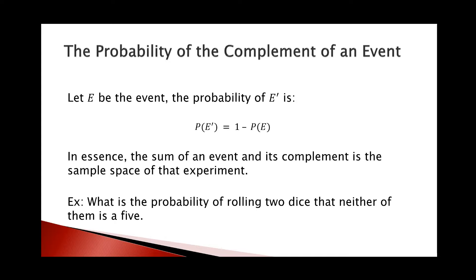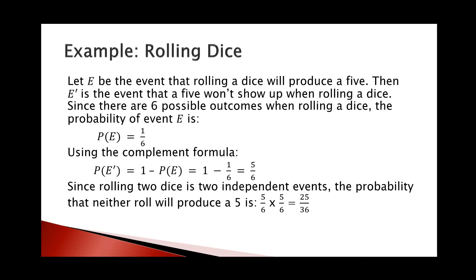Let's illustrate this with an example. What is the probability of rolling two dice such that neither of them is a 5? Let E be the event that rolling a die produces a 5. Then the complement of E is the event that a 5 won't show up when rolling a die. Because there are 6 possible outcomes when rolling a die, the probability of event E — rolling a die produces a 5 — is P(E) = 1/6.